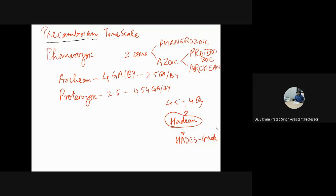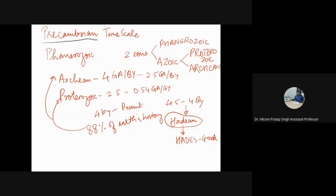From 4 billion years to the present, around 88 percent of the Earth's history is captured in these two eons — Archean and Proterozoic — making this time period very important. If you consider geological time as 24 hours, the Phanerozoic eon is a very small part, because around 90 percent of this time spans the Archean and Proterozoic.